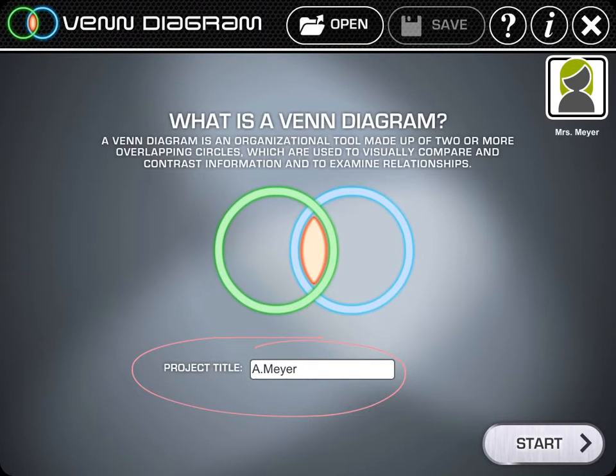Hopefully you used Venn diagrams before in class. Basically it's a way to show things that are similar between two groups and things that are different. This area in the middle is to show overlapping between two groups and the areas at either side where they don't overlap shows where they are different.